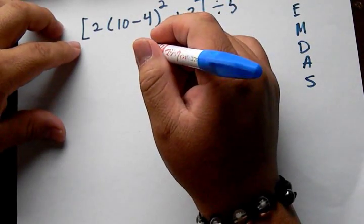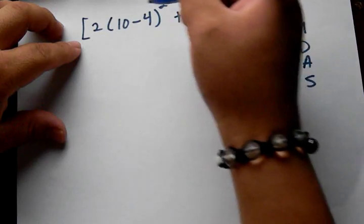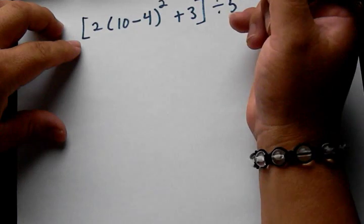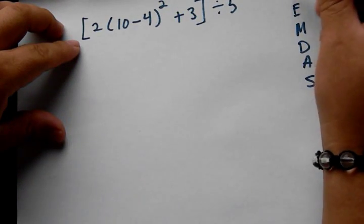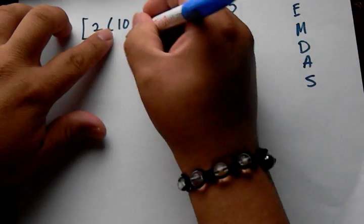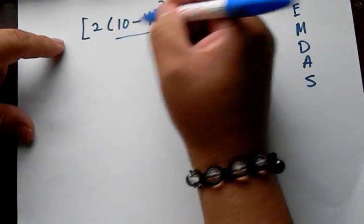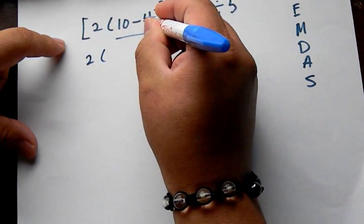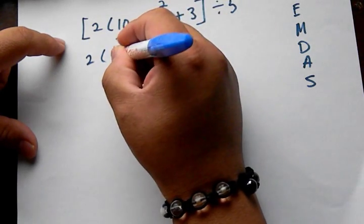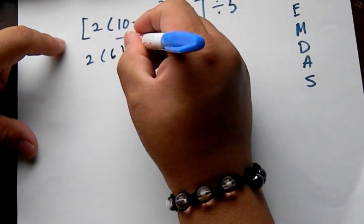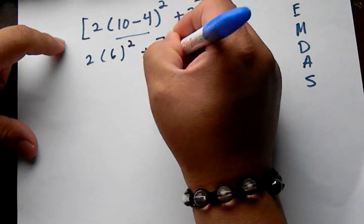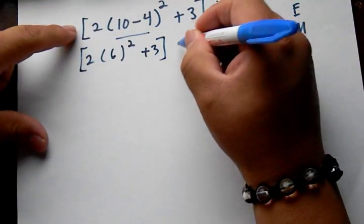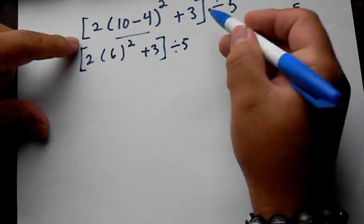So let's take a look at it. What can we do first? First we can subtract the inside — this part — because that's the inside parentheses. So do this first. 10 minus 4 is 6, so now you've got 2 times 6 squared plus 3, divided by 5. That's the first step.